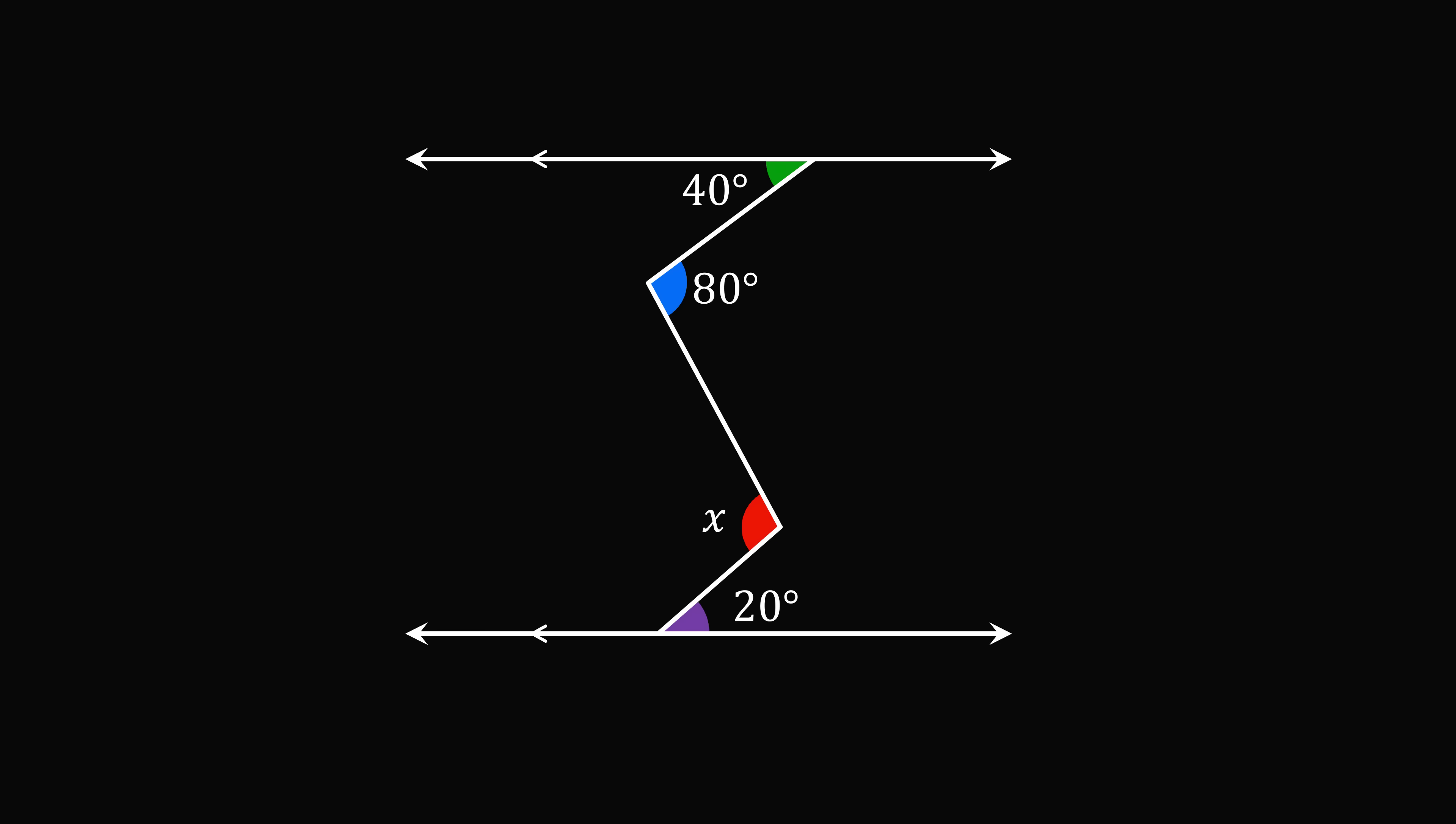So here's how you can work it out. The first thing is to observe that the diagram is not drawn to scale. This is what an 80 degree angle would actually look like if it were drawn to scale. So you should never assume a diagram is drawn to scale unless it's said you can assume that. But don't worry, this won't stop us from solving the problem.